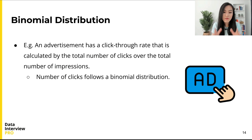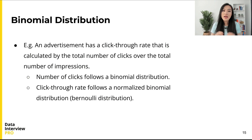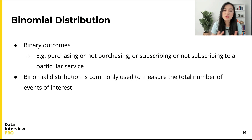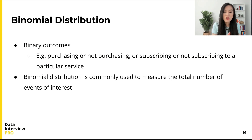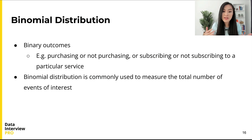That's a simple question — it follows a binomial distribution because it has a binary outcome and we are counting the number of successes. How about the click rate? It's also a binomial distribution, but it's a normalized binomial distribution, or a Bernoulli distribution, because it represents the success rate rather than the total number of successes. Similarly, for other binary outcomes such as purchasing or not purchasing a product, or subscribing or not subscribing to a service, we can use a binomial distribution to measure the total number of successes — with success defined as the occurrence of the event of interest.